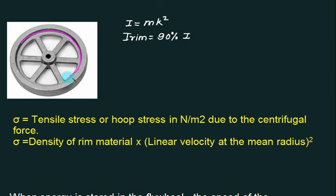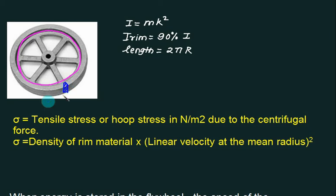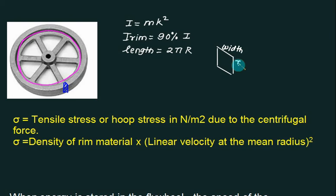The total length around the rim equals the circumference, which equals 2πr. Looking at the cross-section of the rim, we can identify two dimensions: the width and the thickness. We can label the width as 'a' and the thickness as 'b'.